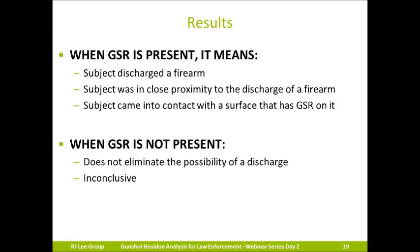When three-component, highly specific characteristic GSR particles are confirmed on a sample, we can say that sample is positive for gunshot residue. When primer GSR is found, one of three scenarios occurred: A, the subject discharged a firearm; B, the subject was in proximity when a firearm was discharged; or C, they came into contact with a surface or environment that contains GSR. Each of these scenarios is equally likely under most conditions. For example, if GSR is found in a vehicle, it means a firearm could have been discharged in or near that vehicle, or someone with GSR on them came into contact with it.